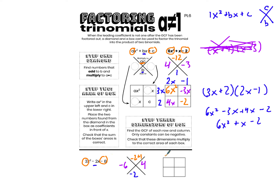Next step: I draw my box and fill in the inside so I can find the outside factors. Top left is 3x squared, bottom right is negative 8 — original ax squared and original c. The two x terms are going to be the terms that add to negative 2, found using my diamond. Negative 6 and 4 add to negative 2, giving me my x terms: negative 6x and 4x. Now I have the inside of my box: 3x squared minus 6x plus 4x minus 8, which simplifies to 3x squared minus 2x minus 8.